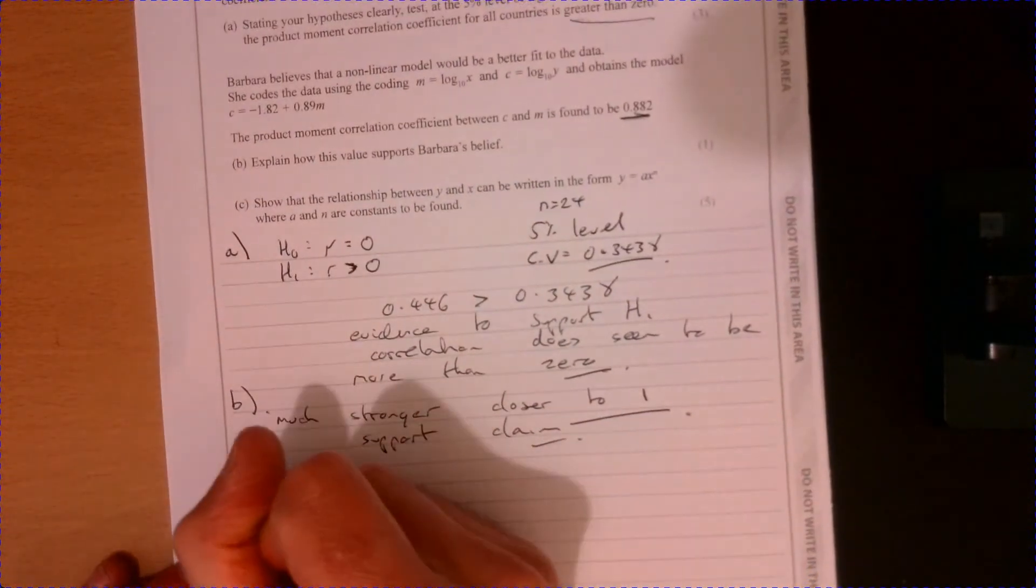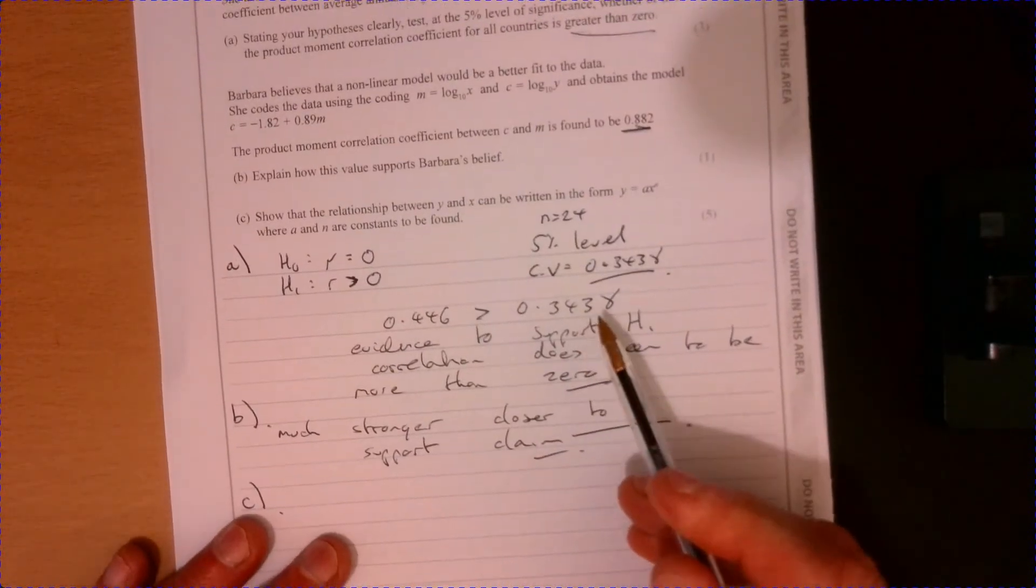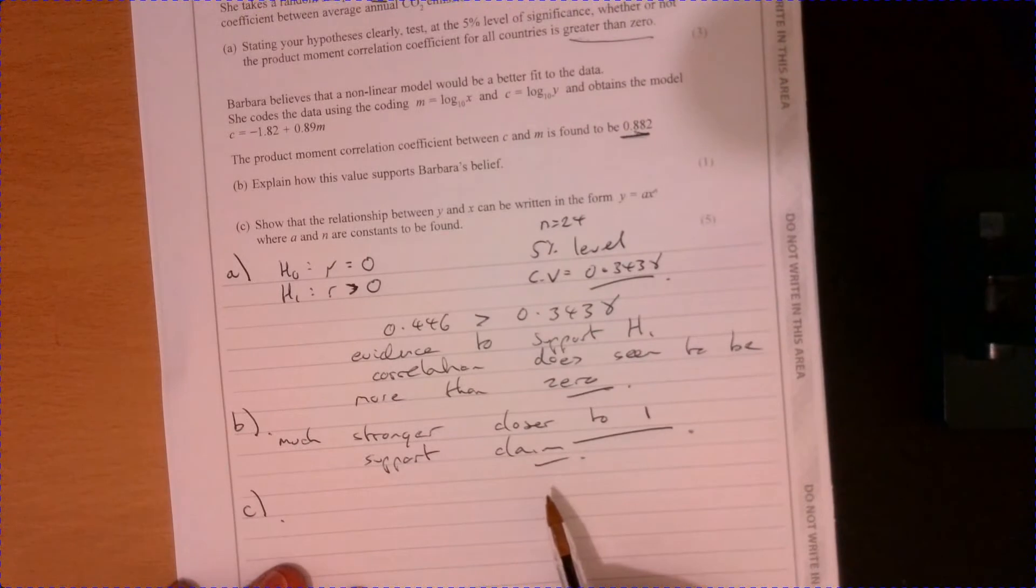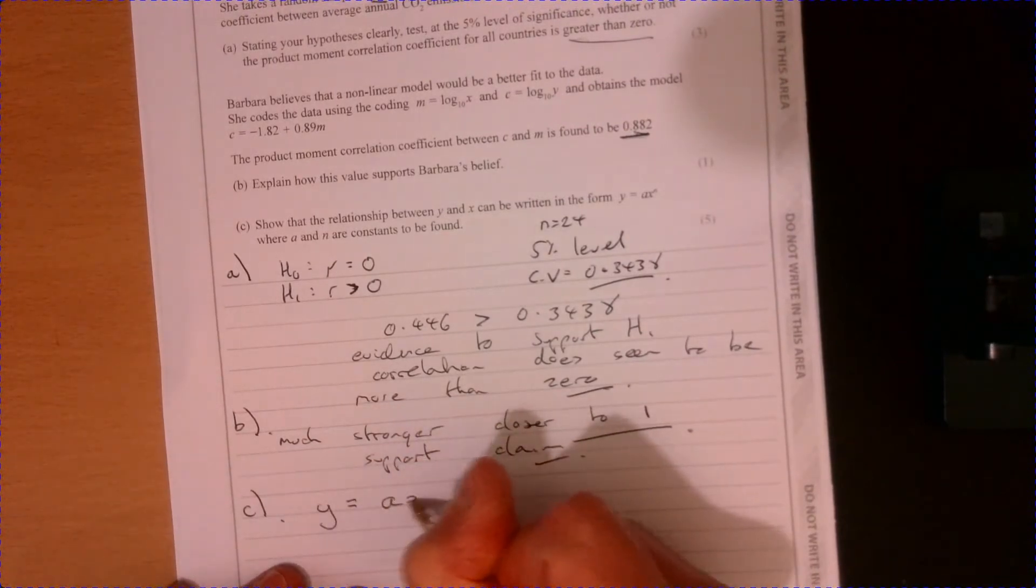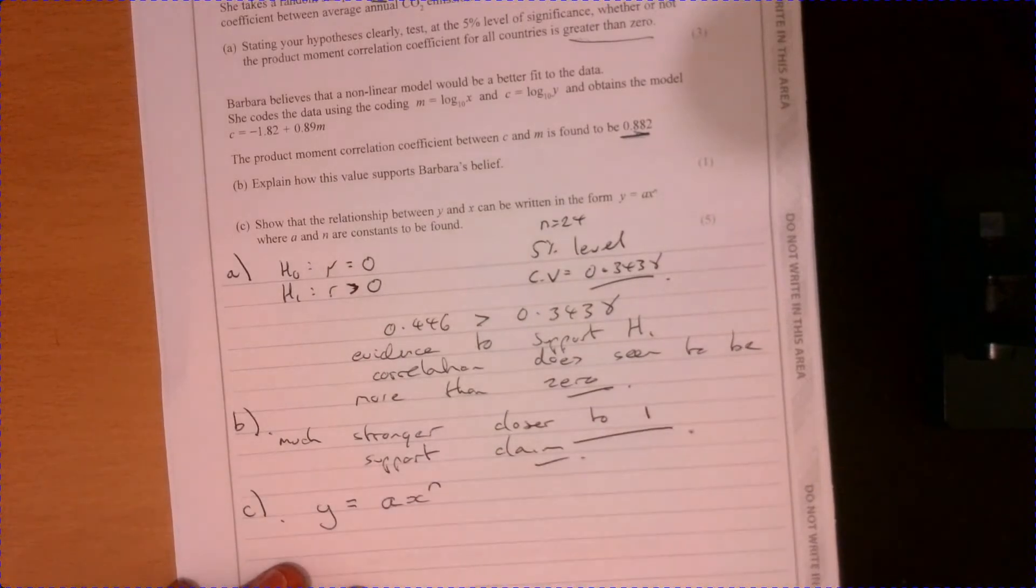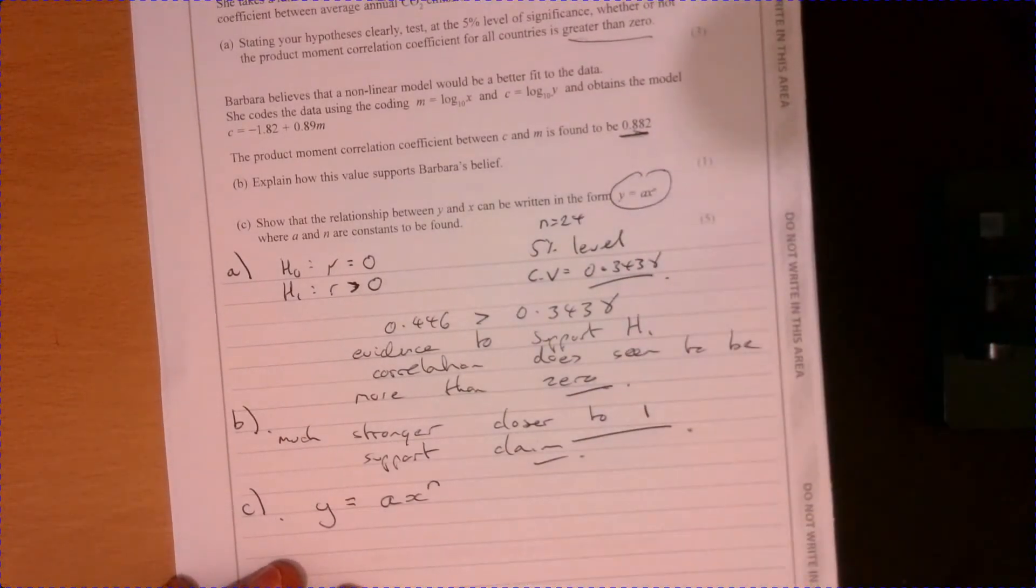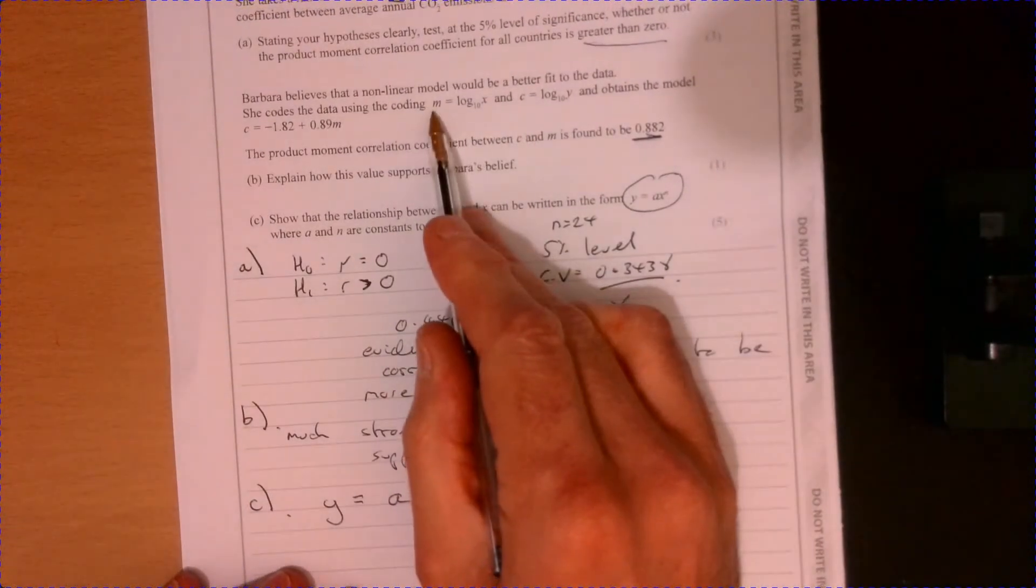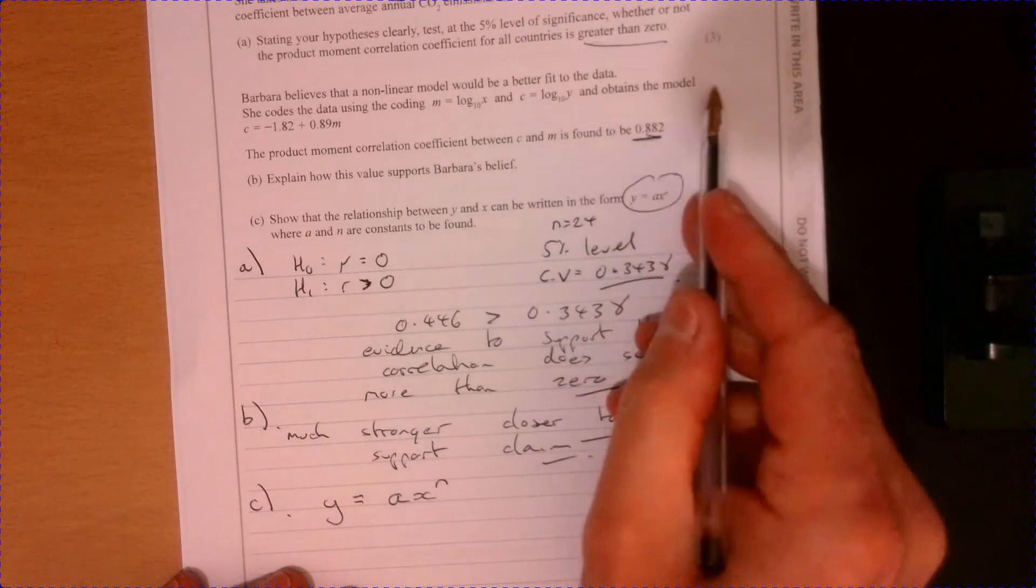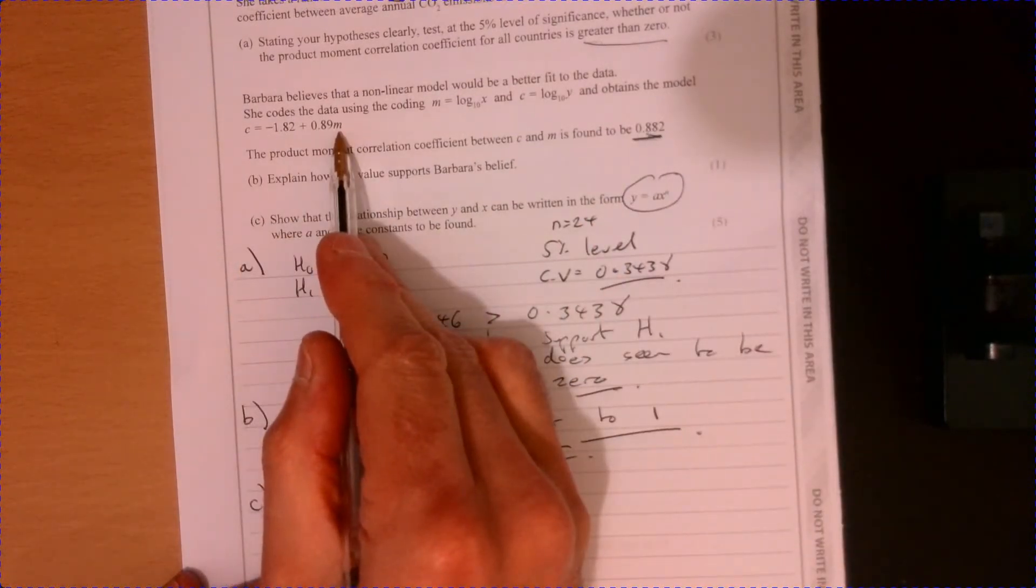Part C. So we're going to try and model this. What we've actually got. We want it to look like this. This is what it's asking us. So it's given me some information here. It's talked about M and C.